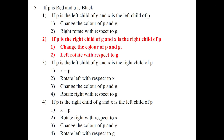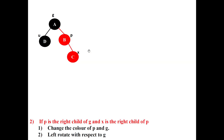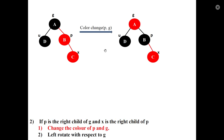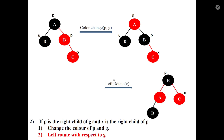Second case: grandparent's right is parent and parent's right is X — right-right situation. Insert new node C as grandparent's right-right. Operation: first change the color of parent and grandparent, then perform a left rotation with respect to the grandparent.